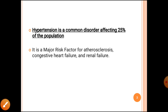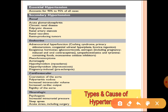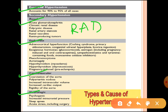90 to 95% of cases have no cause — essential hypertension. But in about 5% of cases you can have an underlying cause. Renal causes include glomerulonephritis with hematuria and hypertension, chronic renal disease, polycystic disease, renal artery stenosis, and renin-producing tumors.